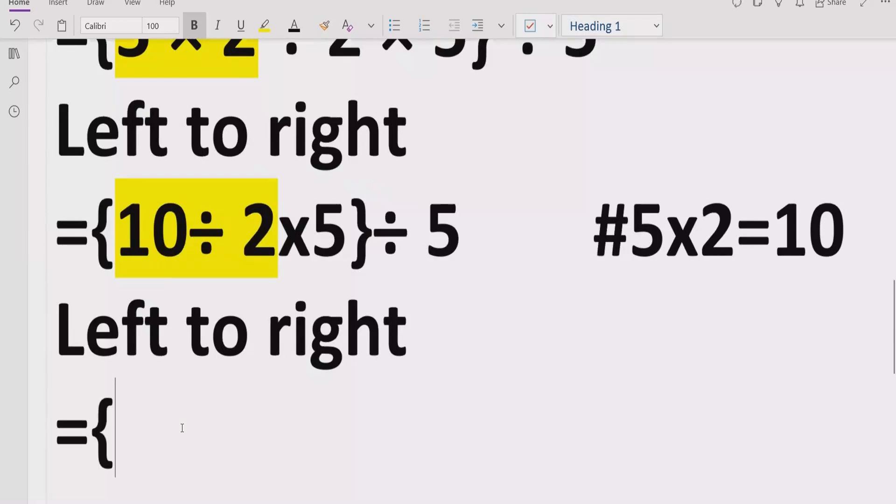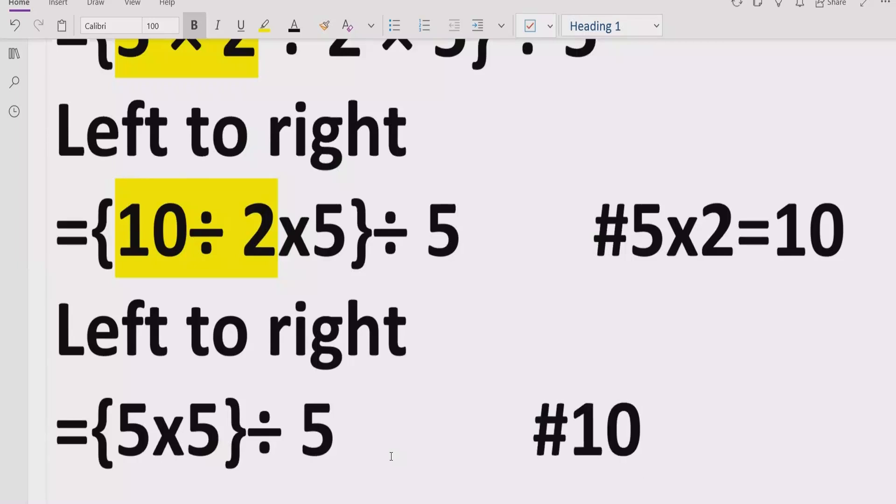So what we will do: 10 divided by 2 equals 5, multiplied by 5, and divide it by 5 we will write as is. And here we will give the reference: 10 divided by 2 equals 5.